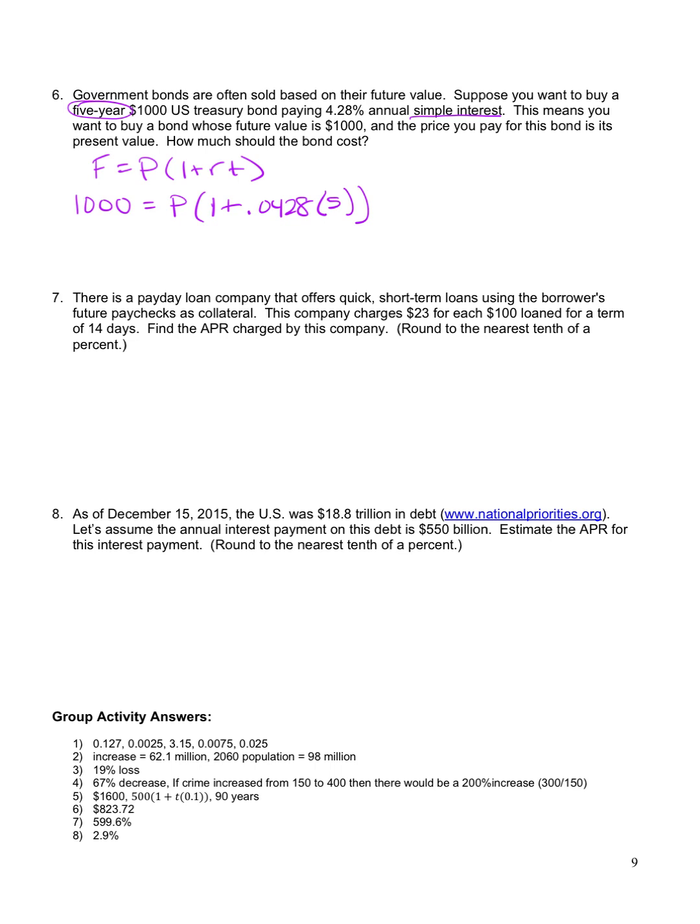So following the order of operations, I do inside the parentheses first. And inside the parentheses, we do the multiplication before the addition. So we do 0.0428 times five, and then add one, and I get 1.214. So 1,000 equals 1.214 P. And then to get P by itself, I'm going to divide both sides by 1.214. Those cancel. So we get P equals $823.72.